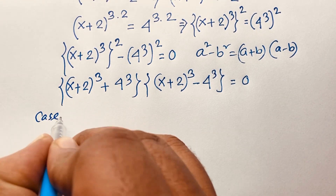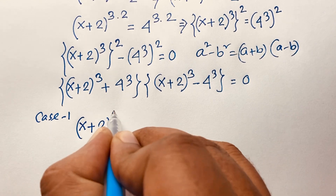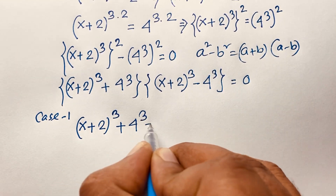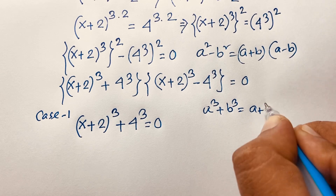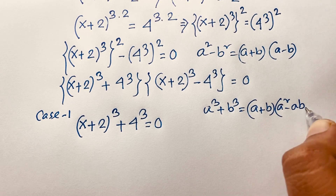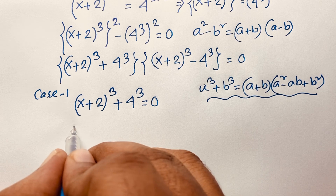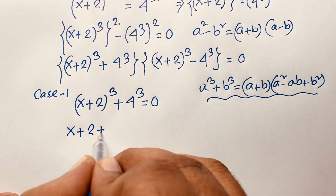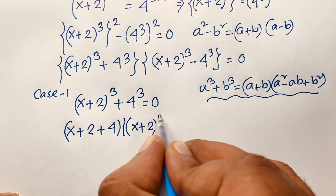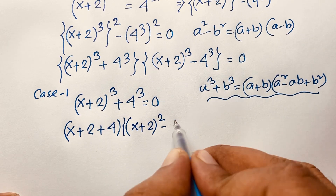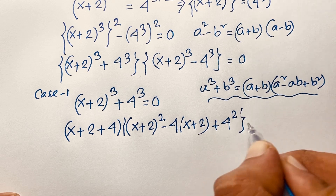Our first case: (x+2)^3 + 4^3 = 0. We apply the sum of cubes formula: a³ + b³ = (a + b)(a² − ab + b²). So this expression becomes (x + 2 + 4) × [(x+2)² − 4(x+2) + 4²] = 0, where a = (x+2) and b = 4, giving us (x + 6) × [(x+2)² − 4(x+2) + 16] = 0.